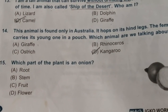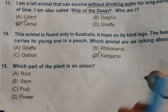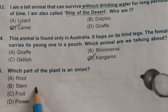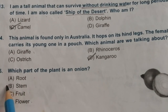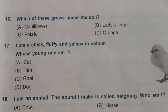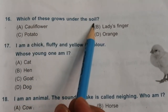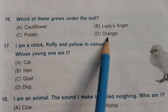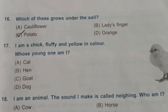Fifteenth question: which part of the plant is an onion — root, stem, fruit, or flower? Onion is a stem. Question number sixteen: which of these grows under the soil — cauliflower, ladies finger, potato, or orange? The answer is potato.